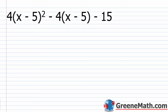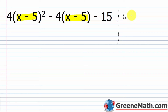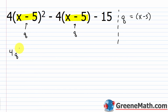Let's look at another scenario where you can use substitution. We have 4 times (x minus 5) squared minus 4 times (x minus 5) minus 15. If someone said go ahead and factor this, you might look bewildered. But if you see something common — like the quantity (x minus 5) — you can replace that with a variable. Let q equal the quantity (x minus 5), and everywhere you see (x minus 5), replace it with q. That gives 4q squared minus 4q minus 15.